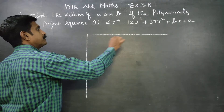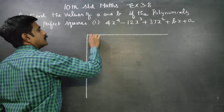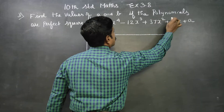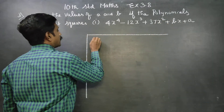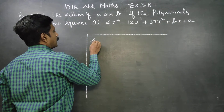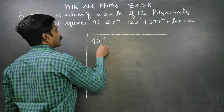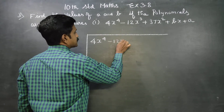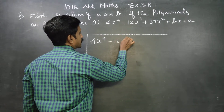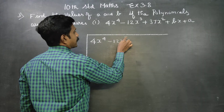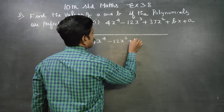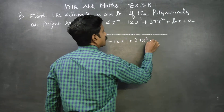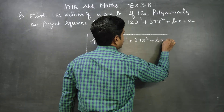Division method. Arranging in descending order. The polynomial in descending order: power 4 and power 3 are correct. Looking at the powers: 37x² plus Bx plus A. The unknowns are B and A.